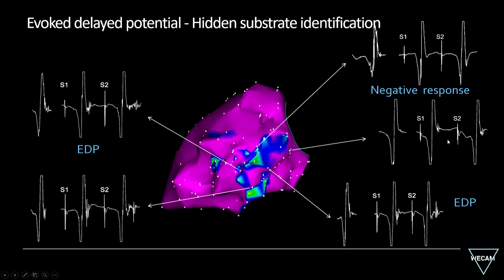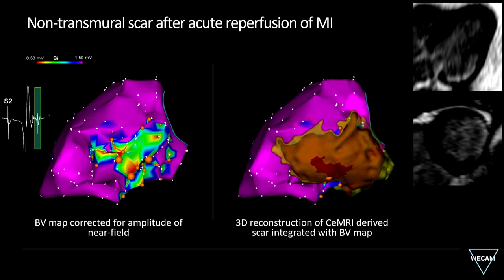If you adapt your mapping window to the delayed component, the sub-endocardial scar is revealed. An MRI on this patient shows a sub-endocardial non-transmural scar. This fits nicely with the low-voltage scar identified by annotating the voltage after S2 of the second component. The scar from CMR can be segmented and projected on the endocardium, fitting the area identified by the evoked potential approach.